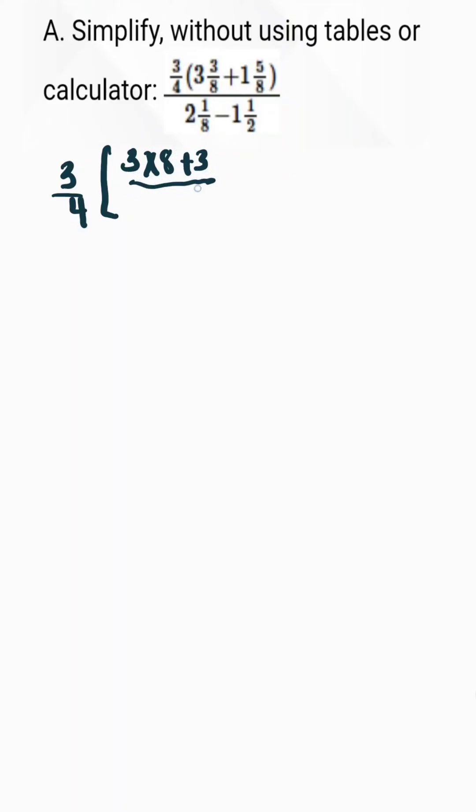Plus 1 multiplied by the denominator which is 8 plus the numerator over the denominator of 8. This is the method used for converting mixed fraction to improper fraction.